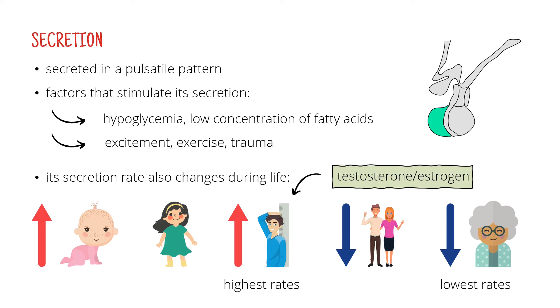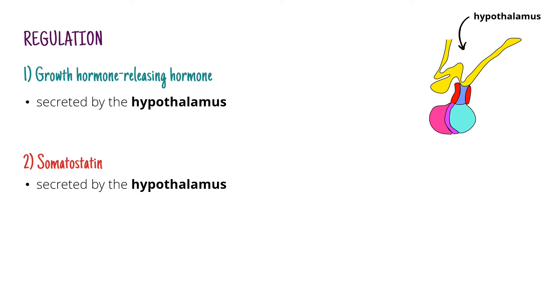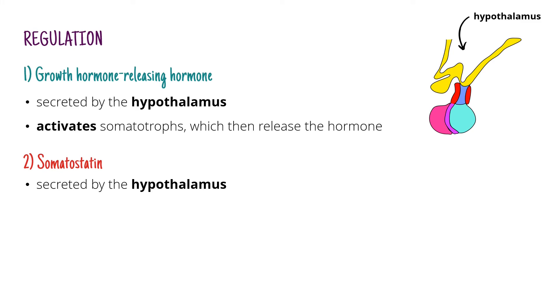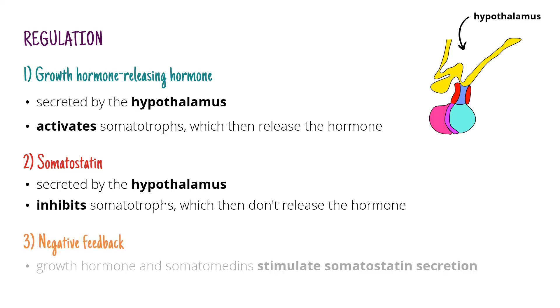Before we jump to pathophysiology, let me just say a few things about the way growth hormone is regulated. Growth hormone is regulated by hypothalamic hormones: growth hormone releasing hormone and somatostatin. Growth hormone releasing hormone activates somatotrophs — the cells in the anterior pituitary that produce growth hormone — and they then release it. Somatostatin, on the other hand, inhibits somatotrophs and they then don't release any hormone at all. Negative feedback also plays a role so that when growth hormone and somatomedins are released, they stimulate the secretion of somatostatin, and somatostatin then inhibits its further secretion.